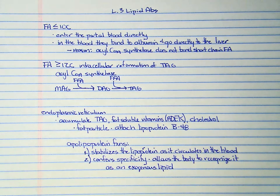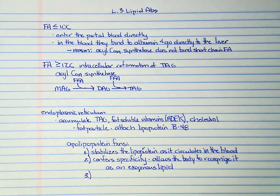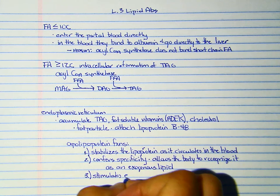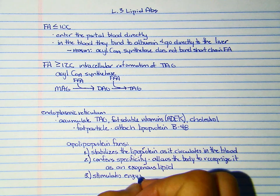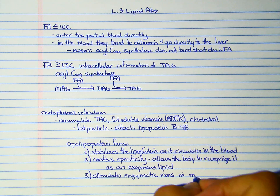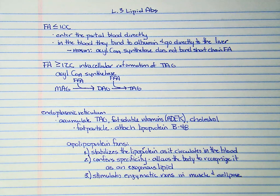And the reason it's exogenous is it's being synthesized, or it's being made from fats that came from the diet, so they've been absorbed, synthesized this new TAG, and those are considered exogenous lipids, as opposed to endogenous lipids which come from the body itself. The third thing it does is it stimulates enzymatic reactions in muscle and adipose. And so this is going to be important when we want the muscle and the adipose to take up this exogenous lipid.